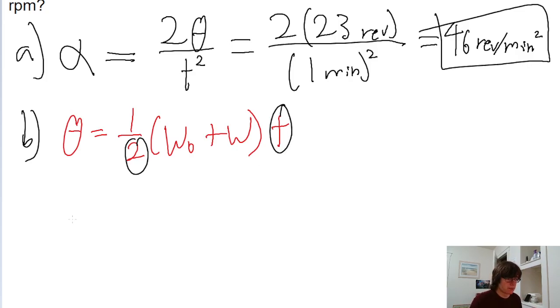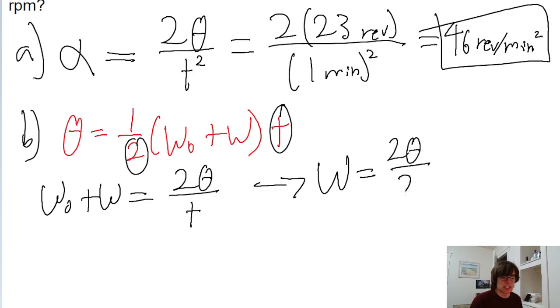So we end up with ω₀ plus ω equals two θ divided by time. Lastly, subtract ω₀ from both sides of the equation to get an equation just for ω. So the final angular speed equals two θ divided by t minus ω₀.